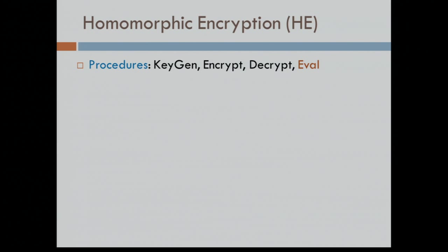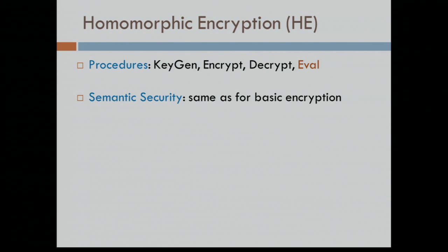In terms of what it is, homomorphic encryption is, first and foremost, an encryption scheme. So there is key generation, there is encryption, there is decryption. The added piece here is an evaluation procedure — this is a functionality requirement of the encryption scheme. An evaluation procedure that you can apply to encrypted data. In terms of security, we're not talking about anything special. This is just the standard notion of semantic security, or passive security, or chosen plaintext security, whatever you want to call it.